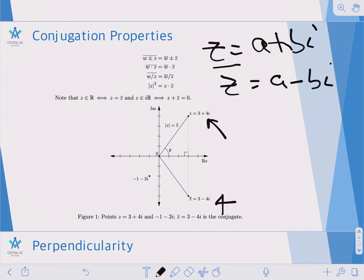its conjugate becomes 3 minus 4i. And on the complex plane that basically corresponds to reflecting across the x-axis or the real axis.